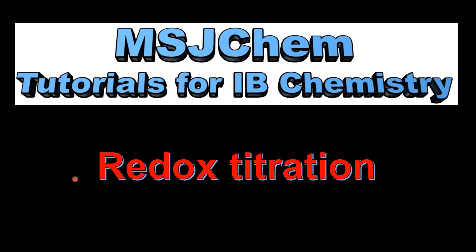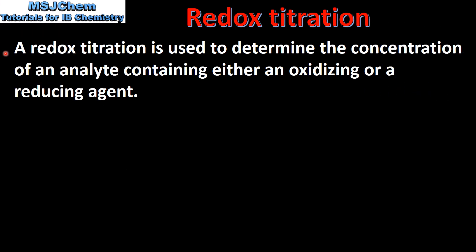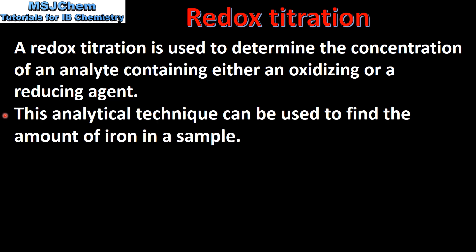This is MSJChem. In this video I'll be looking at redox titration. A redox titration is used to determine the concentration of an analyte containing either an oxidizing or a reducing agent. This analytical technique can be used to find the amount of iron in a sample.